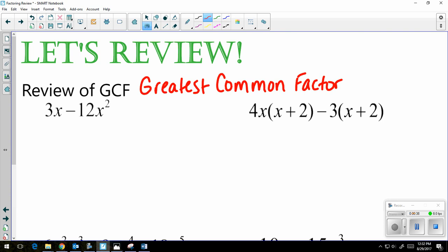So you want to look at numbers and variables. If I take a look at my first example, 3x minus 12x squared, both the numbers can be divided by 3, so that's going to be part of my GCF, and they both have an x in common. So I'm going to take out a 3x and put that on the outside of the parentheses.